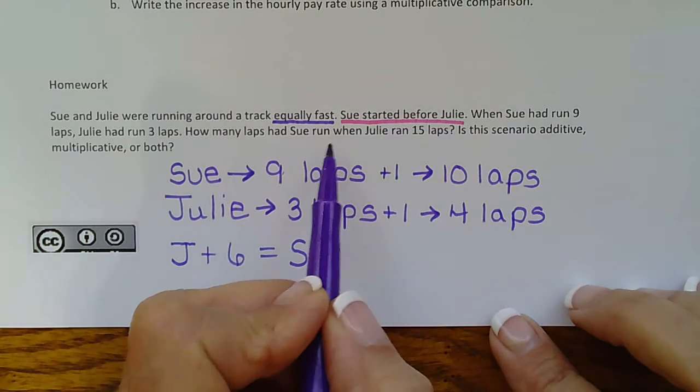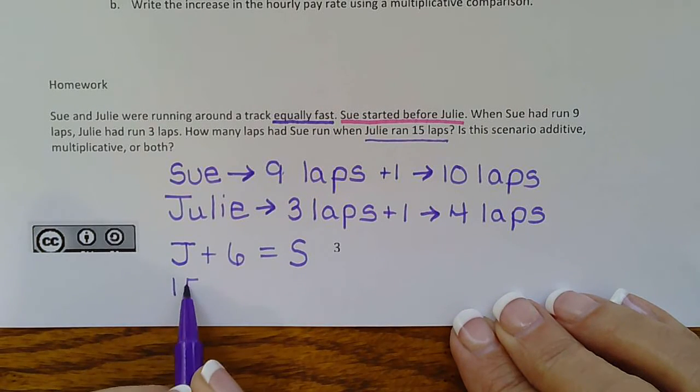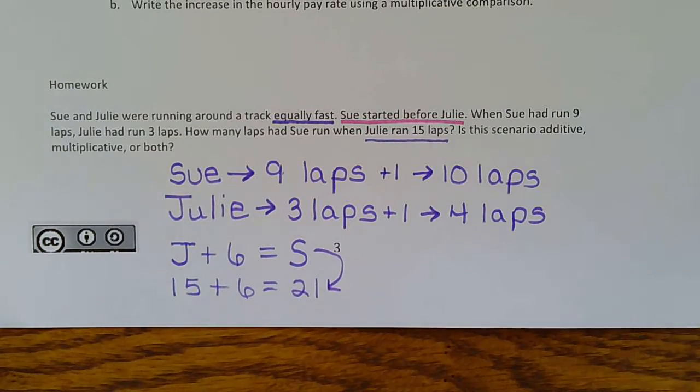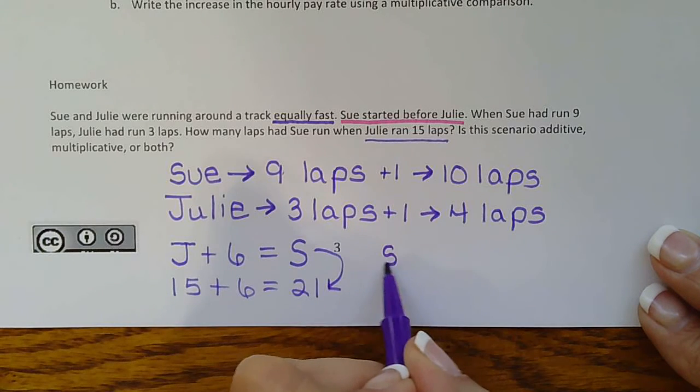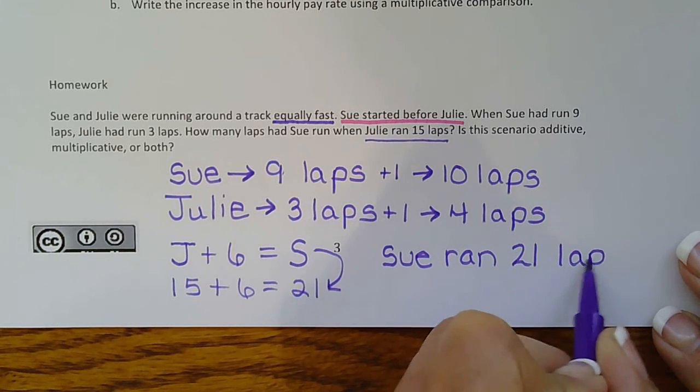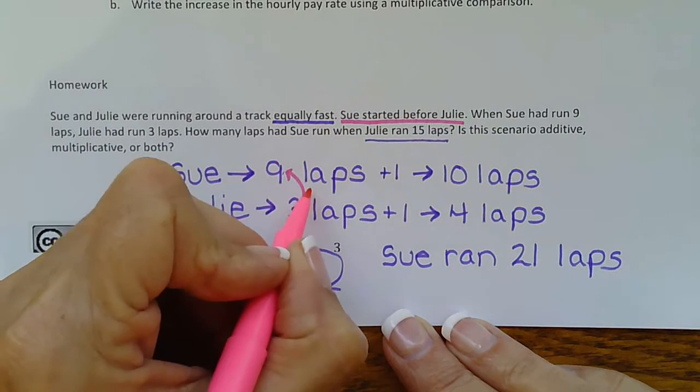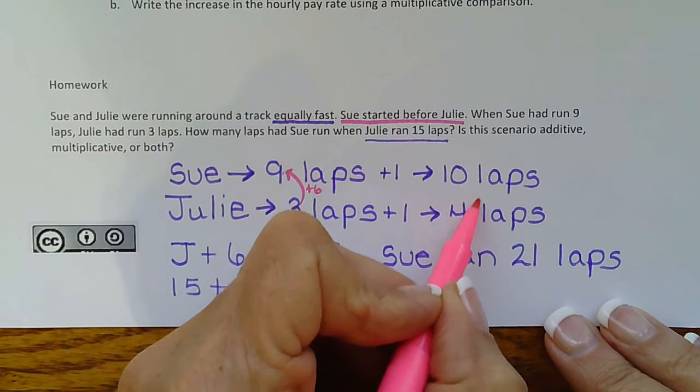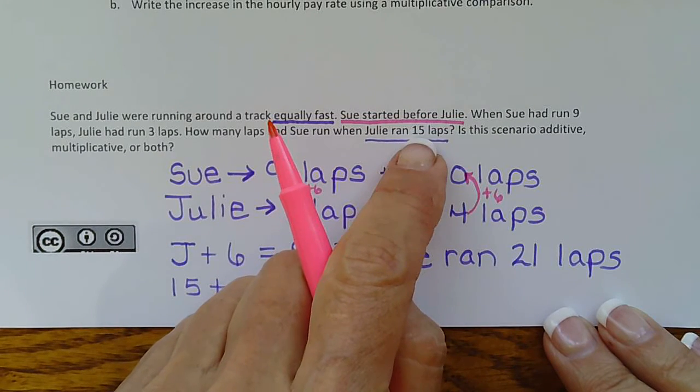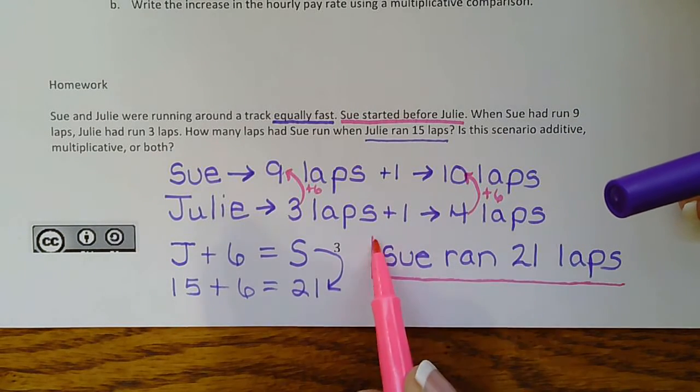So now they said Julie ran fifteen laps. So let's put fifteen in. Fifteen plus six is twenty-one. That means Sue had run twenty-one laps. And then verify that it's correct because we said whatever Julie has, you add six. Whatever Julie has, you add six. So if Julie had fifteen, fifteen plus six is in fact twenty-one. So we can see that is the correct answer for the first part.